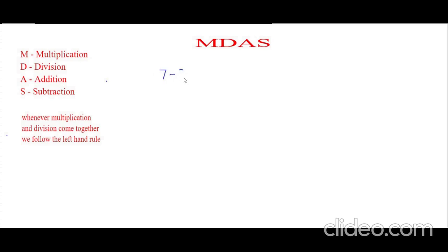7 minus 3 minus 4 times 7 divided by 4. In this question we have all four operators. So let's follow the MDAS rule. According to MDAS rule, we have multiplication first.